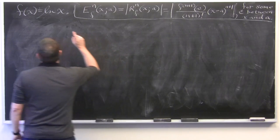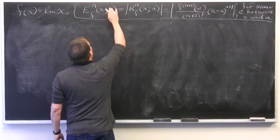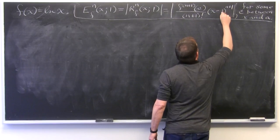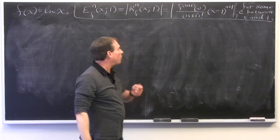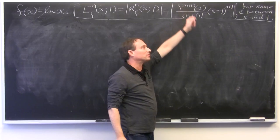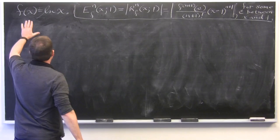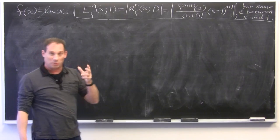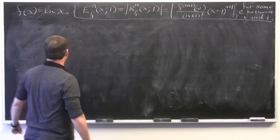We want to look at this in the specific case where f(x) = ln(x), and we're going to always center at 1, so a equals 1 throughout this problem. Before we do anything else, we need a formula for the (n+1)th derivative of f evaluated at c — a general formula. What you do is start taking derivatives of f, see the pattern, and write it down. Technically you'd have to prove it by induction, but we don't expect you to do that. You just start taking derivatives.